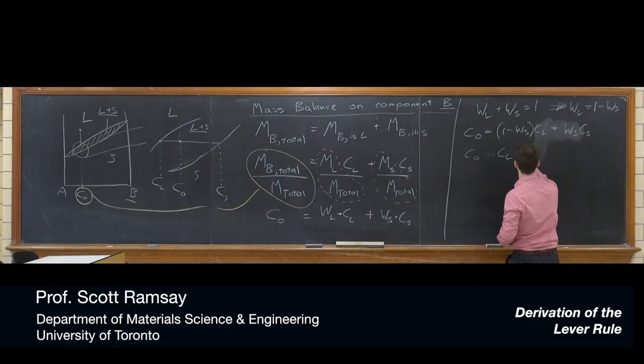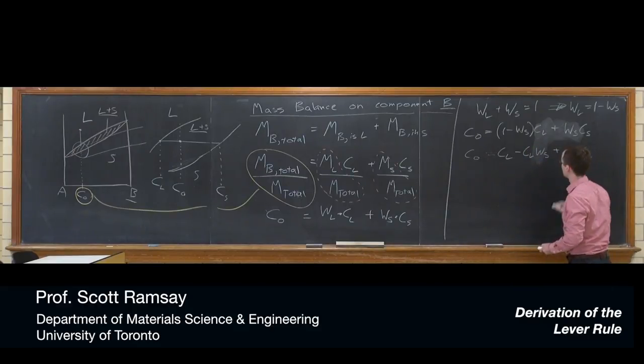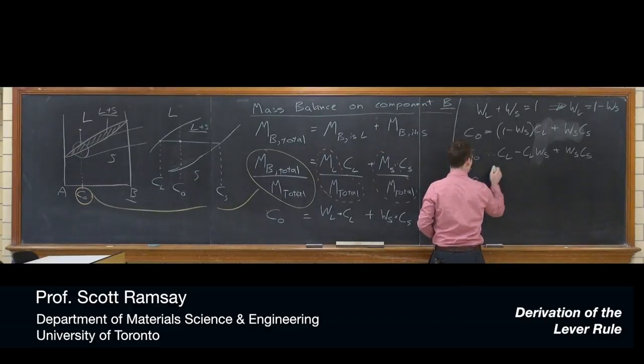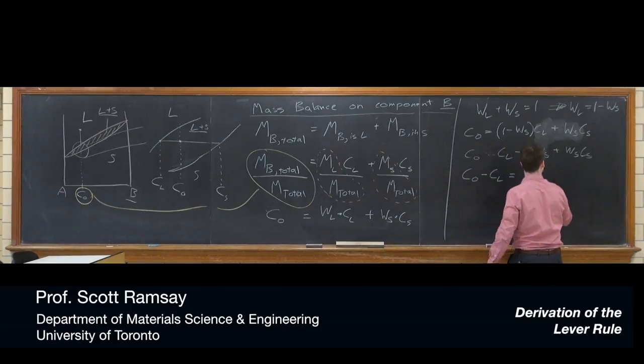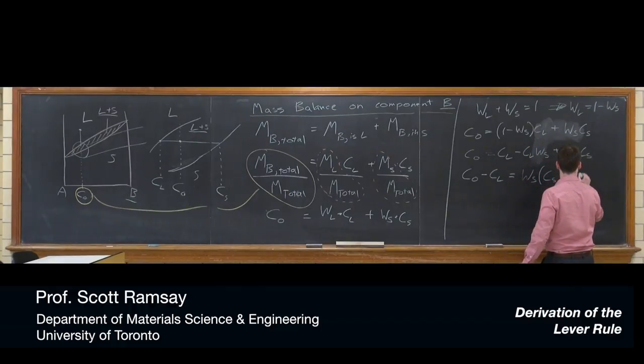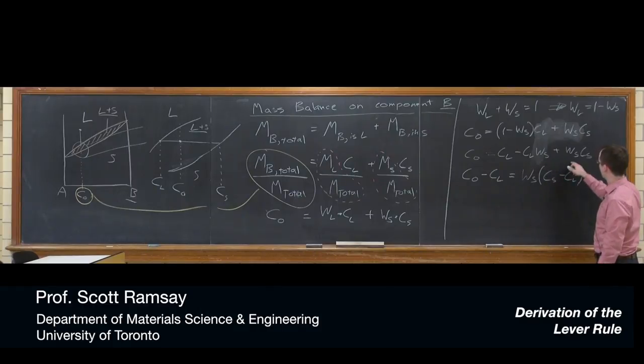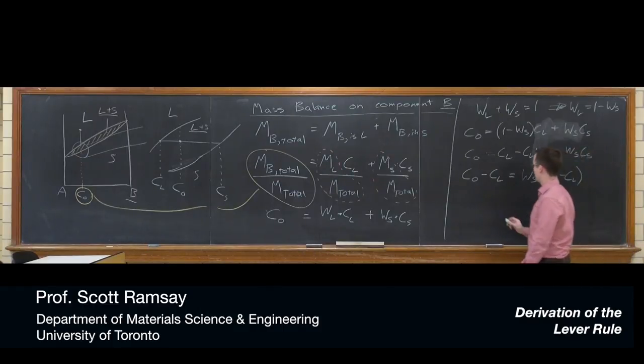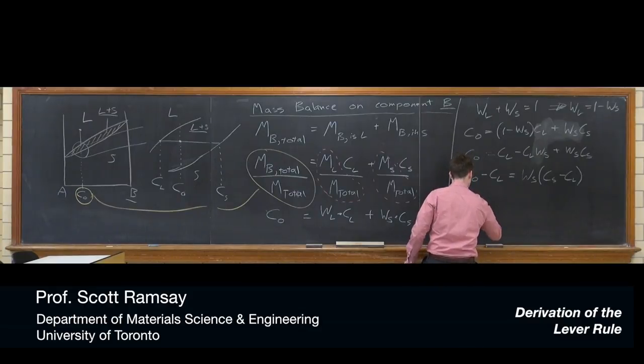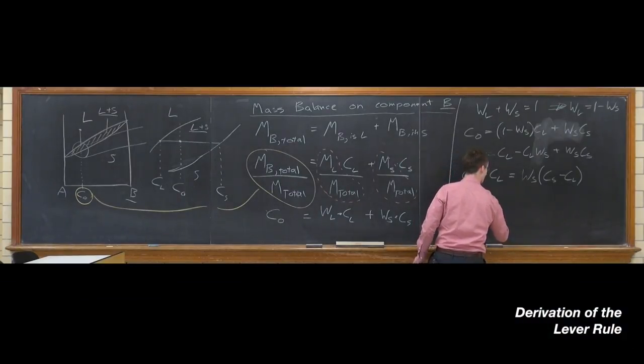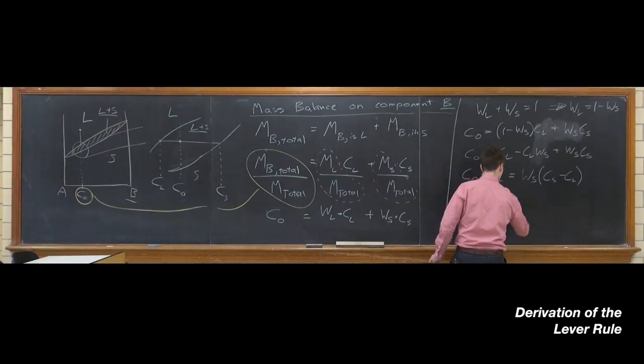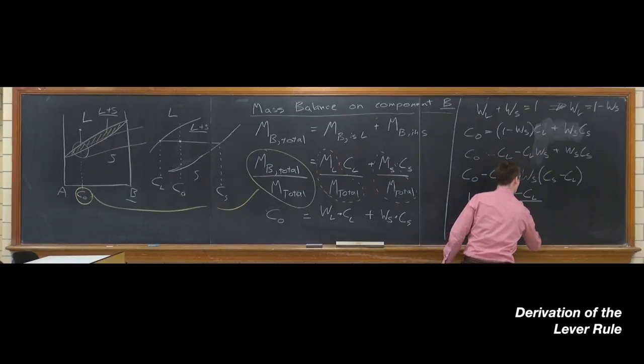Now I can multiply this out. Move C-L over. Okay, let's see if I've done that correctly. I believe I have. So now we've got weight fraction of the solid equal to C-naught minus C-L over C-S minus C-L.